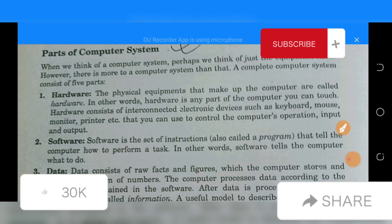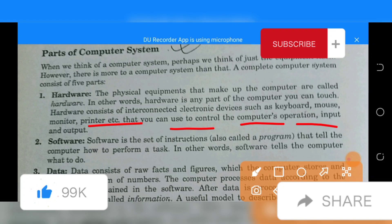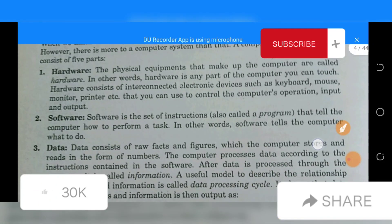The first part is hardware. The physical equipment that makes up the computer is called hardware. In other words, hardware is any part of the computer you can touch. Hardware consists of interconnected electronic devices such as keyboard, mouse, monitor, printer, etc. that you can use to control the computer's operation, input and output.